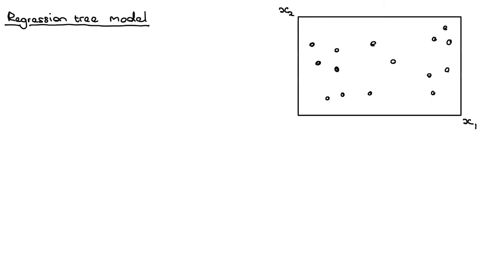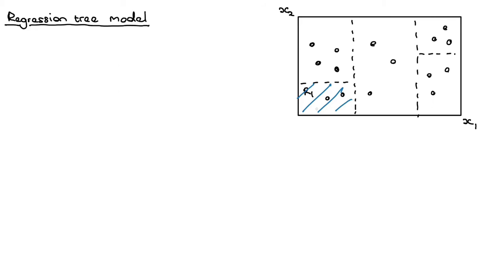Let's first think about how we're going to represent this model mathematically. Let's say that this is our feature space and we've broken it down into blocks. We have a decision tree that has broken down the input feature space into these blocks, where this might be region number one. Inside region number one, we assign to any data point falling in that region the value C1 — so anything landing there gets predicted as C1.